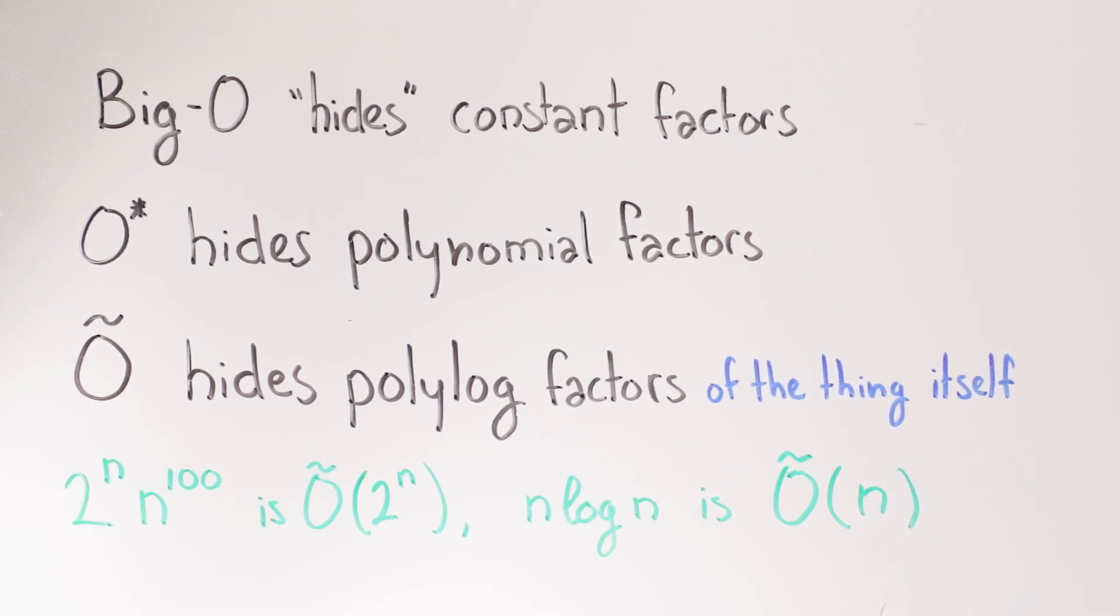It's a similar idea to O star, but instead of polynomial factors, it says we don't care about anything polylogarithmic in the thing that we're talking about.